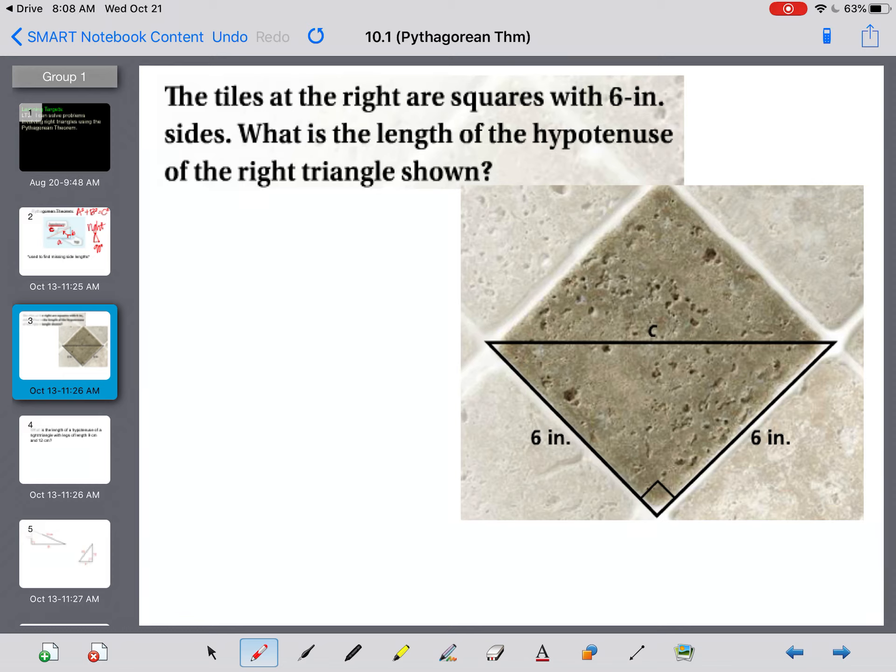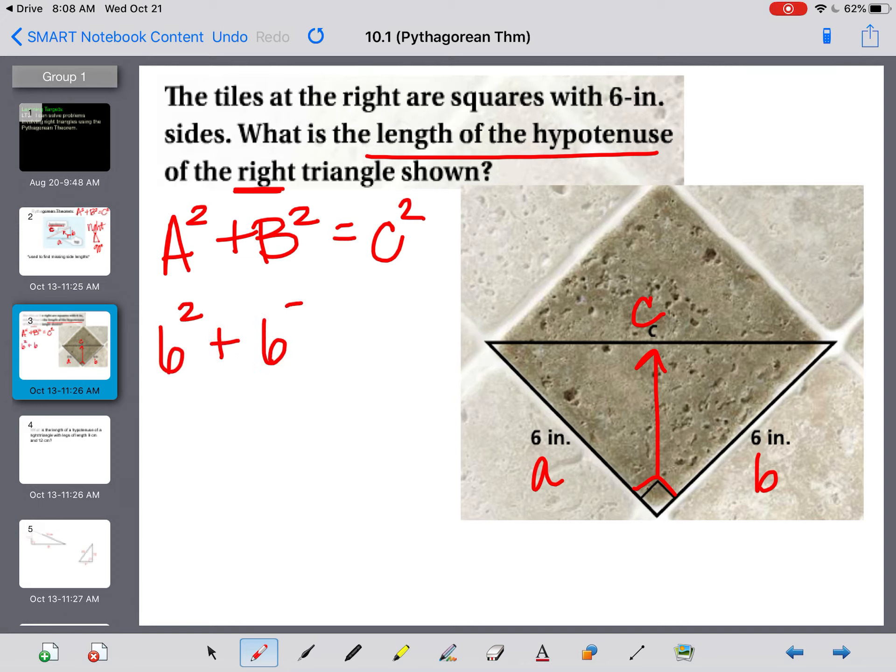Now we're going to use that formula to figure out missing side lengths. This shows tiles that are squares, but every square is made up of two right triangles. So what is the length of the hypotenuse of the right triangle shown? We're only using this triangle. So notice that our 90-degree angle is right here, which means that is our C or our hypotenuse. Because it's a right triangle, we're going to use the Pythagorean theorem. A squared plus B squared equals C squared. And we're in luck. This time it's really easy because A and B are the same, but I'm just going to label them just so that I know in the future labeling is helpful. I'm going to plug in what I have.